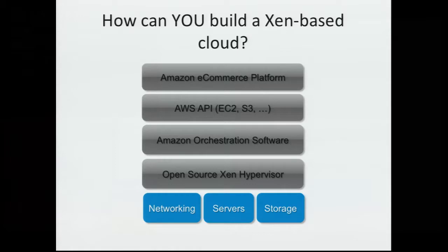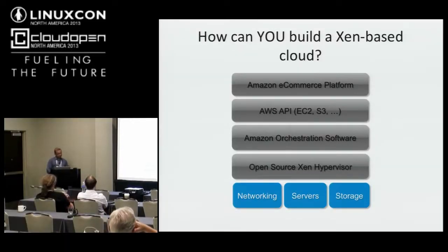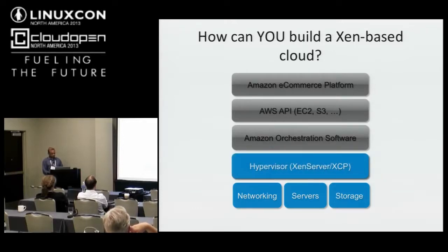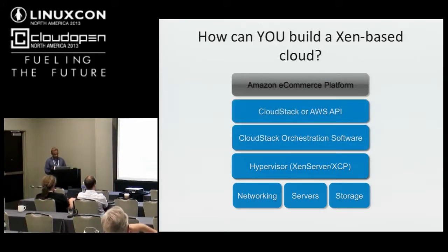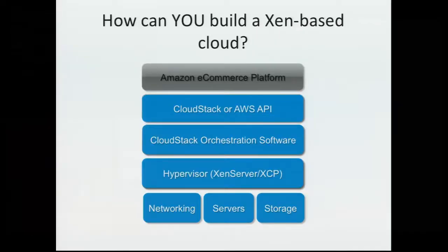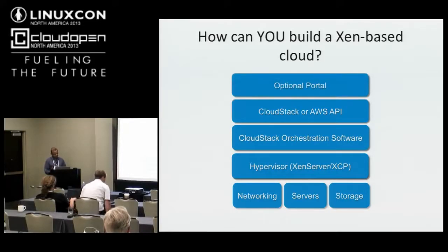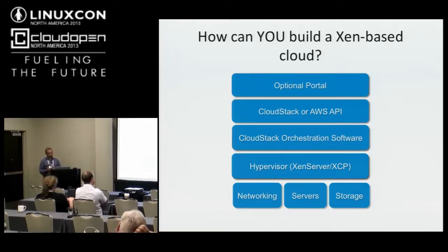So how can you build a Xen-based cloud? You can take the same networking servers and storage — it doesn't have to be commodity; it can be world-class Cisco or NetApp. You use XenServer or XCP as the hypervisor platform, and CloudStack orchestration software. You can use either the CloudStack API or the AWS API to run this cloud, and instead of an e-commerce platform, you can buy an optional portal from Citrix to help you sell the service if you're a public cloud.